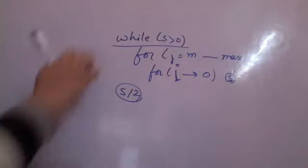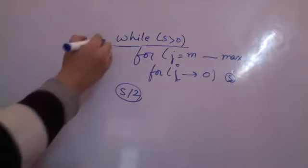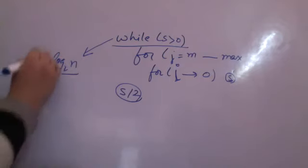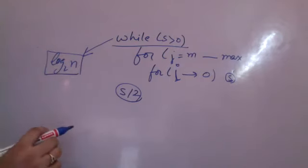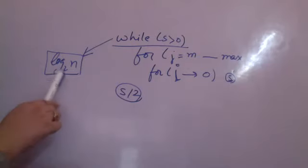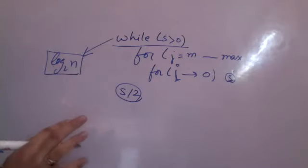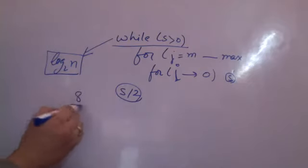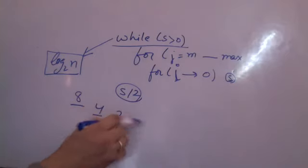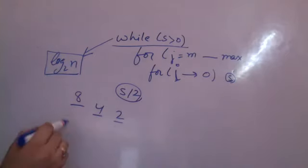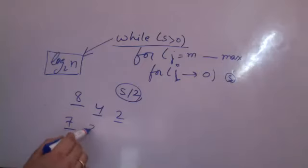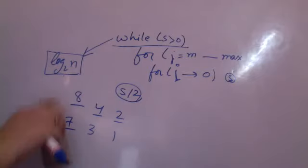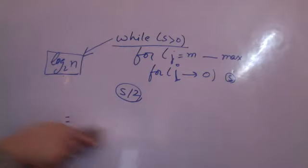So if I am changing s by half every time, how much time will the while loop take? Order of log n — while will take order of log n. While will run how many times? Log n times. If shell size is 8, it runs for 8, 4, 2, 1. If shell size is 7, it runs for 7, 3, 1. So while loop runs log n times. Now how many times is the outer for loop running? From j to max — j is starting from shell size. Maximum time it is going to take is n. Whatever the shell size, j is going to be incremented one by one every time. So it is going to take n repetitions.